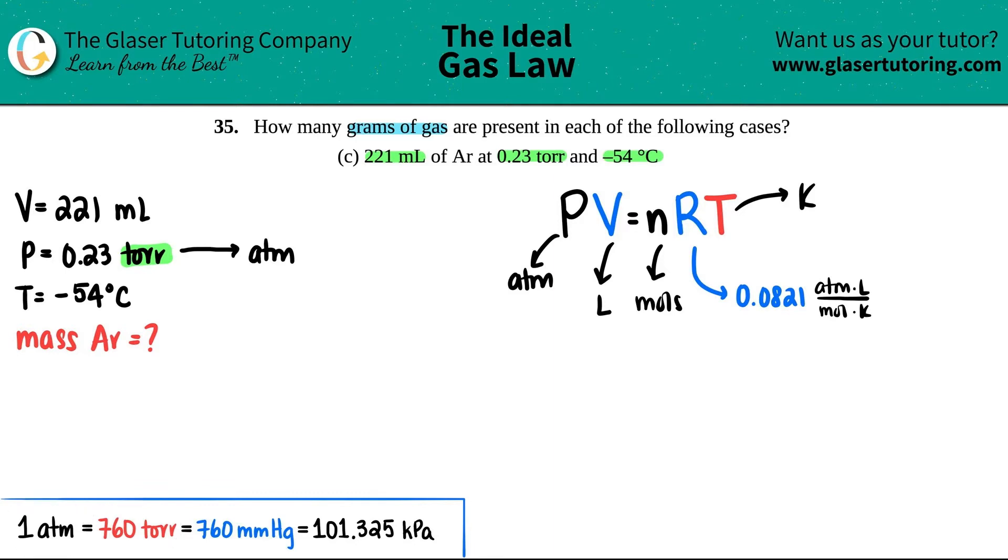Start with what you're given: 0.23 torr times by a ratio. We don't want the torr anymore so that goes on the bottom. We want atm so that goes on the top. One atm equals 760 torr. If we cancel out the torr, we just divide by 760. So 0.23 divided by 760, I get 3.03 times 10 to the negative fourth - really low pressure - and that's the atm value.